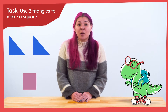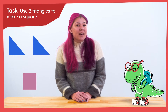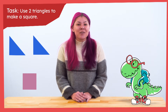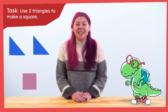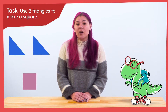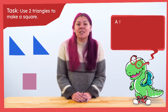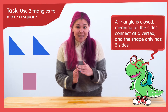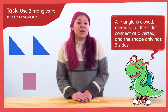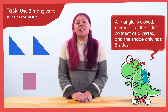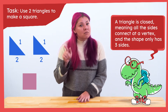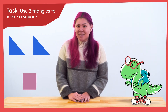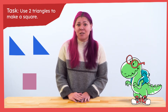So with that in mind, what is one attribute of a triangle? One attribute of a triangle is that it has three sides. We call a shape a triangle if it is closed, meaning all the sides connect at a vertex, and the shape has three sides. When I look at these shapes, I can see that each has one, two, three sides. Now I'm convinced that these are the triangles we'll need for this challenge.